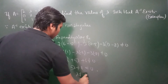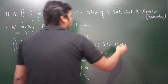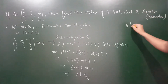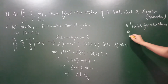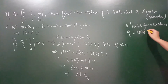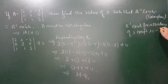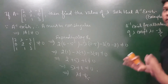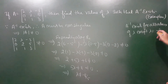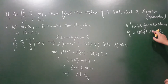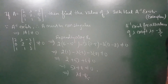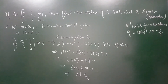This gives us 5 lambda plus 8 should not be equal to 0. Ultimately we get lambda is not equal to minus 8 upon 5. It means A inverse exists for all values of lambda except lambda equals to minus 8 upon 5. इस matrix का inverse सारी values of lambda के लिए निकलेगा, बस lambda not equals to minus 8 upon 5 के लिए नहीं निकलेगा. यह इस question का required solution है.